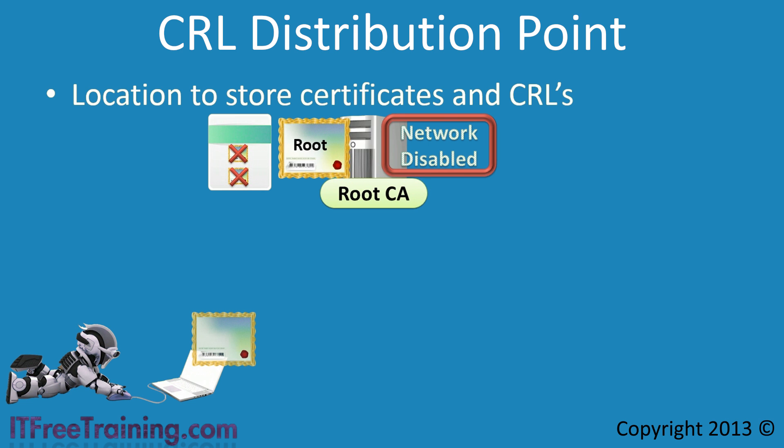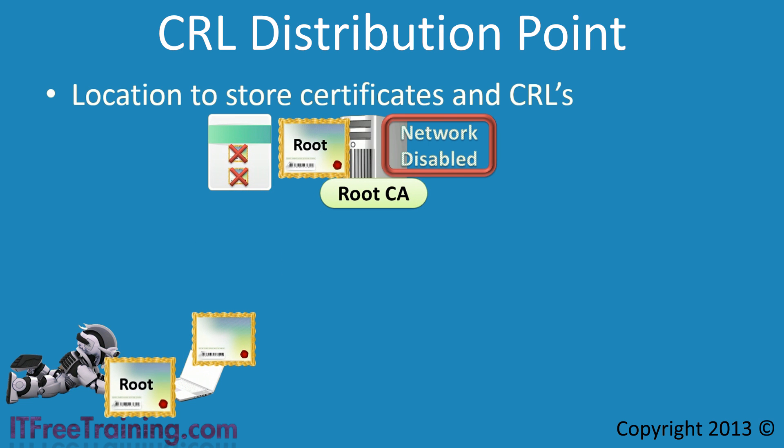Normally this is done by having the client keep a copy of the root CA in its local certificate store. If this certificate has been added, the client will trust any certificate installed in that certificate hierarchy. But this does not tell the client if the certificate is still valid and has not been revoked. In order to do this, the client needs the certificate revocation list, and it needs a location to obtain it from. This is why you need a CRL distribution point.